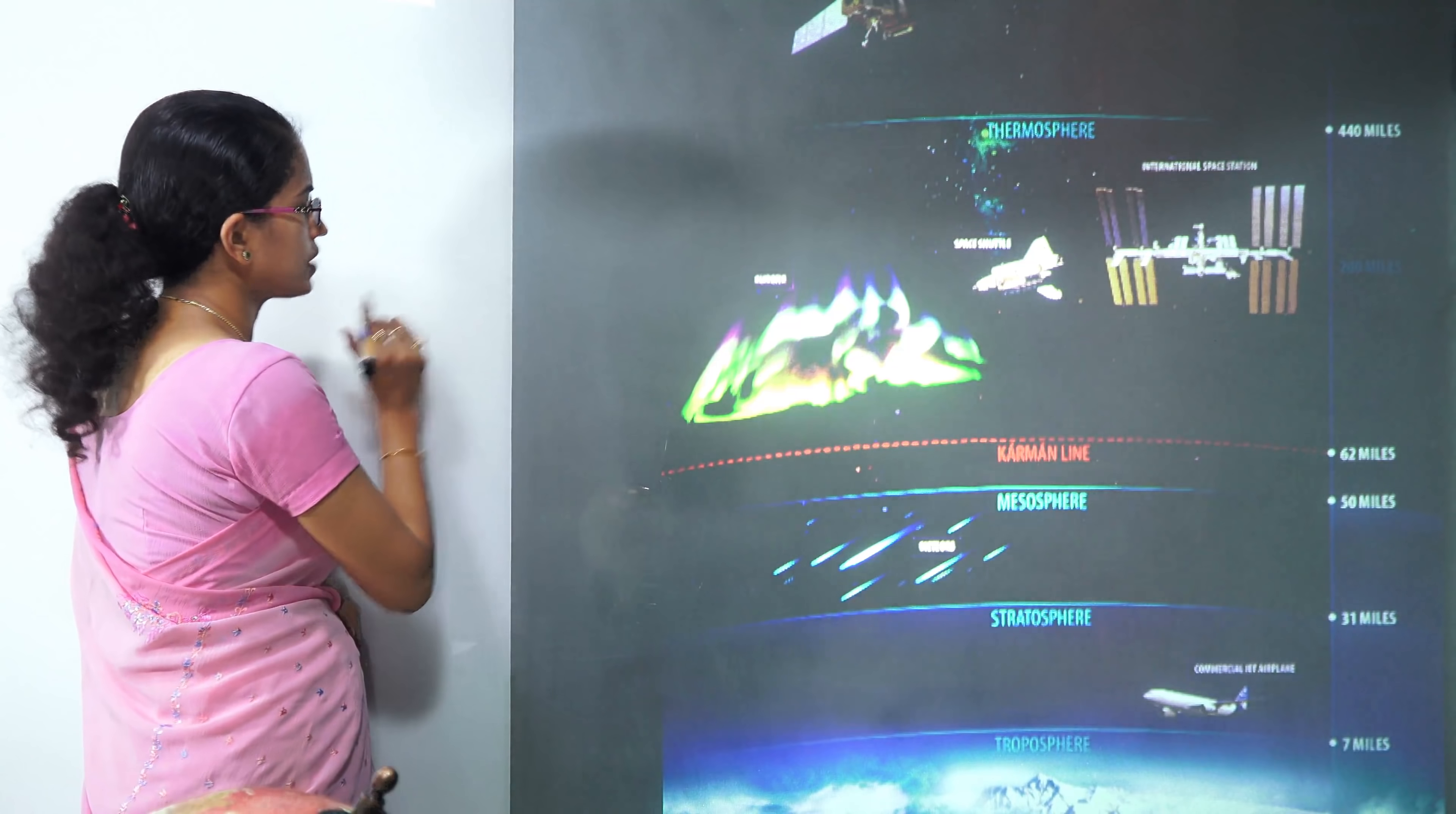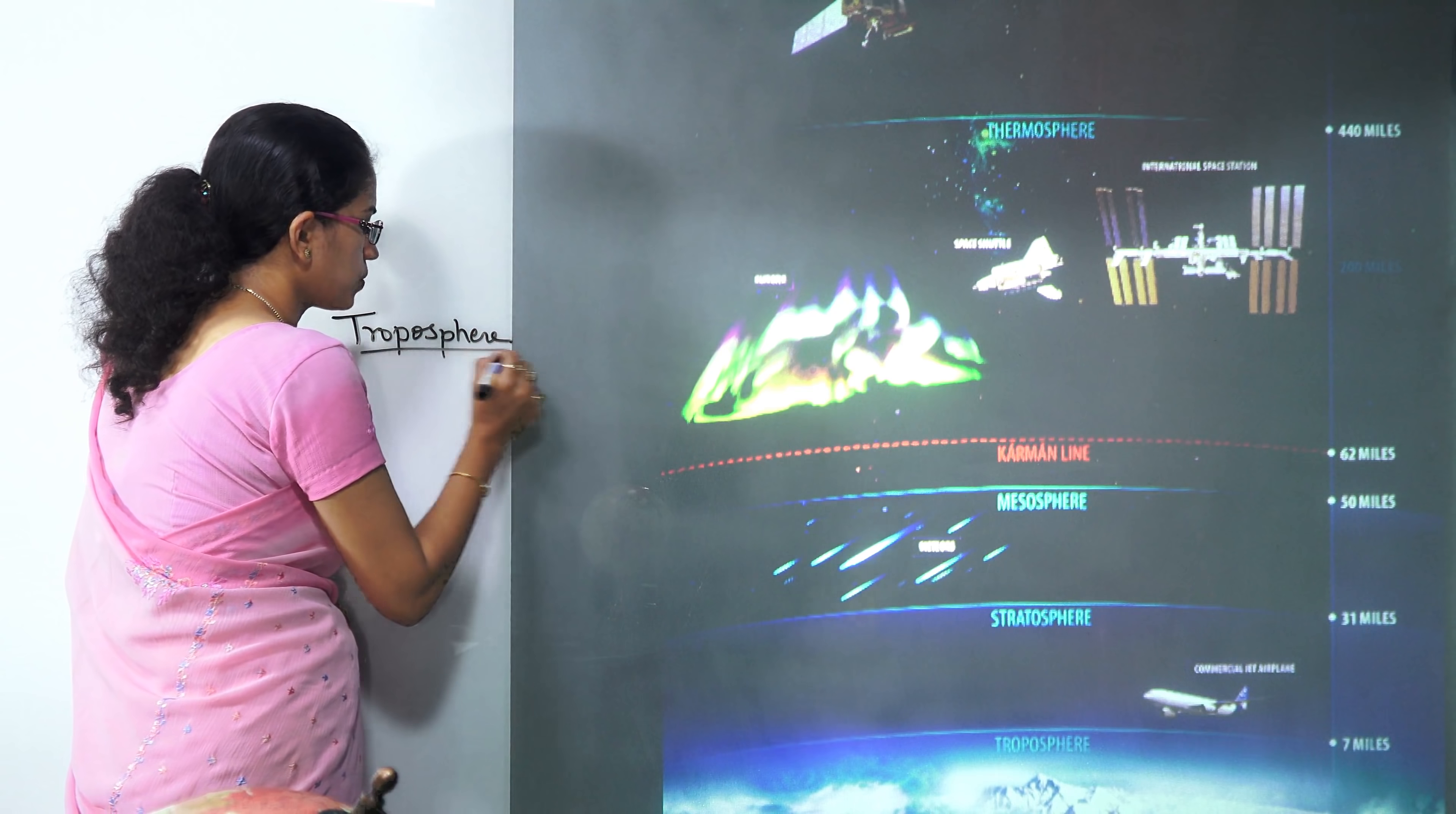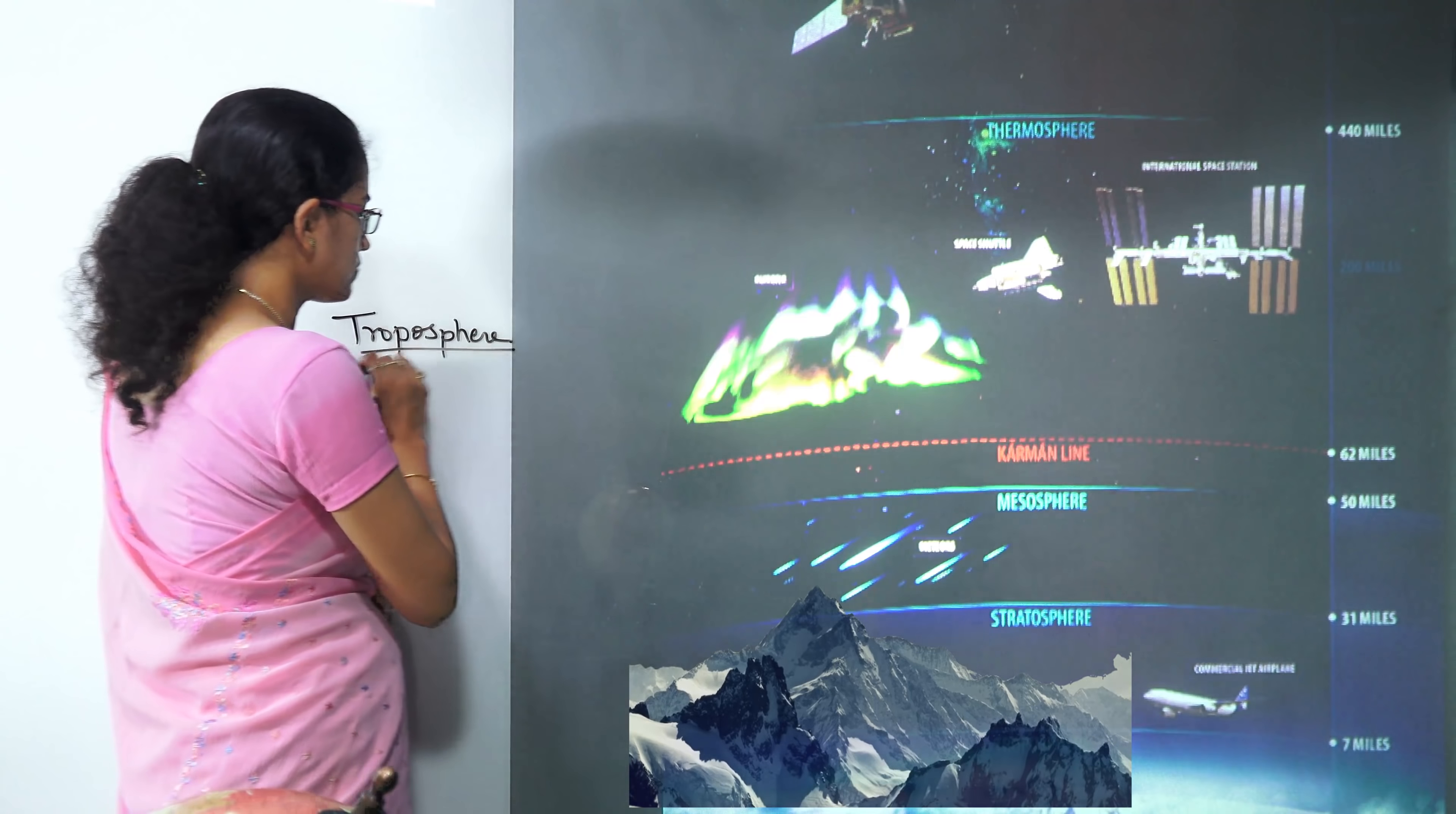The lowermost layer of the atmosphere is known as troposphere. Now troposphere is the region where you have the normal mountains, the normal phenomena of our day to day life that we see.